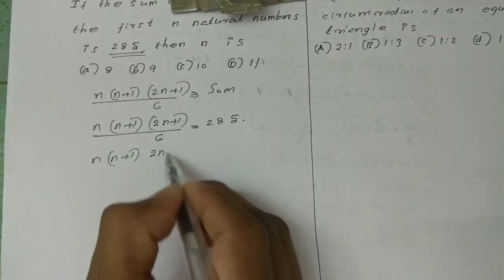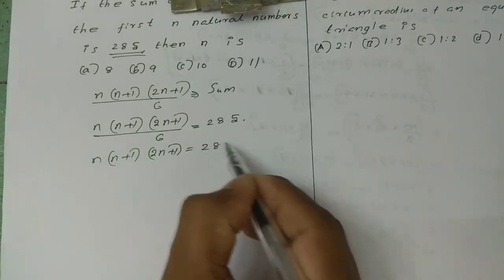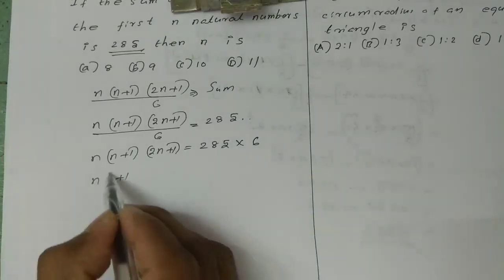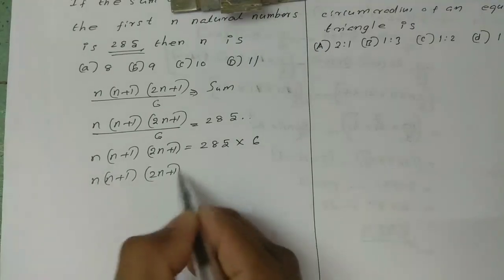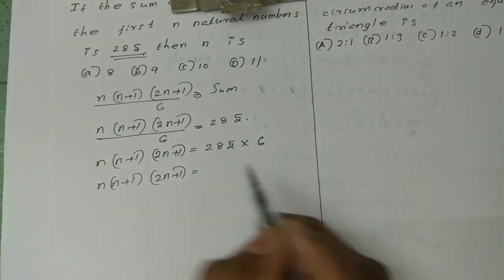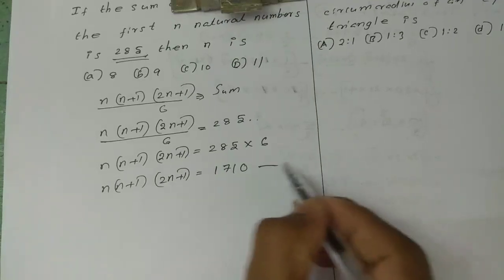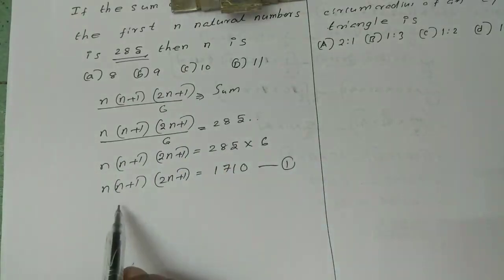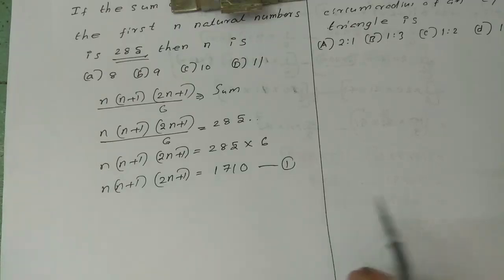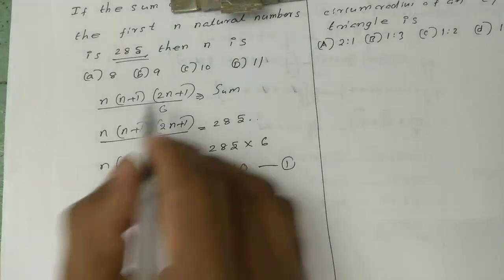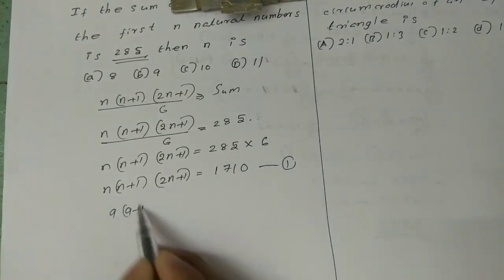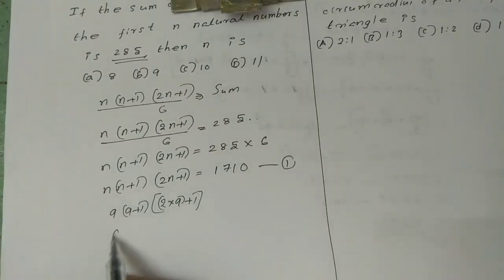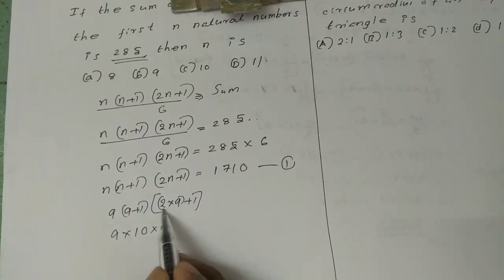So N(N+1)(2N+1) equals 285 times 6, which is 1710. Checking values: trying N=9 gives 9 into 10 into 19 divided by 6. Working through the options to find which value satisfies the equation.